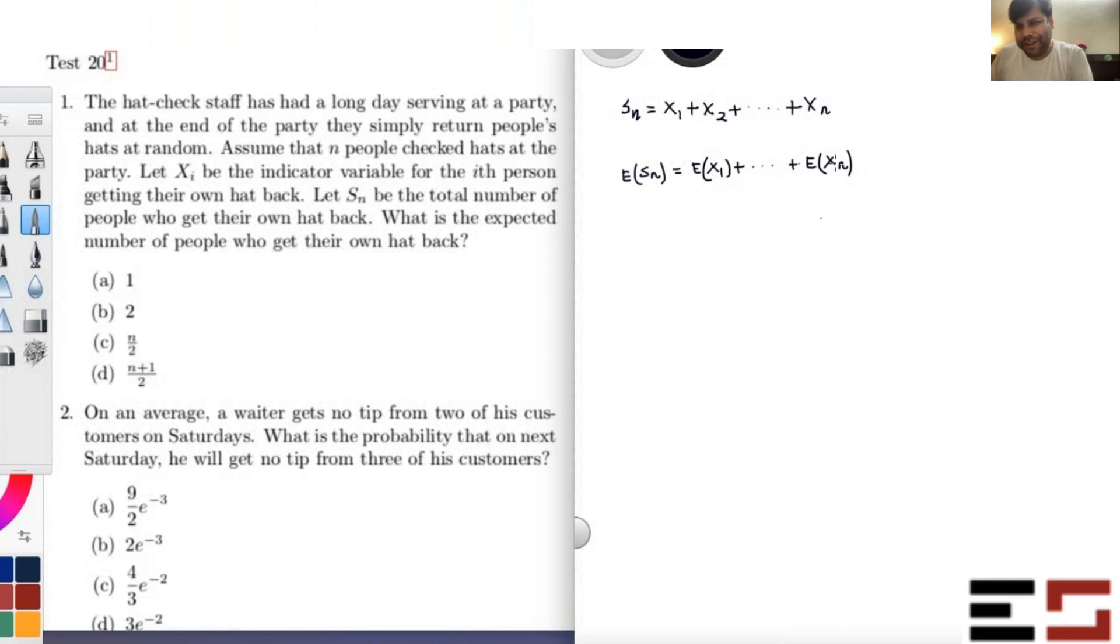So by symmetry they are all Bernoulli one by n random variables. And since they are all Bernoulli one by n random variables, the expectation of each of them is one by n. And there are n of them, so you're going to get one by n times n which is one. Is this fine? Because if you just add one by n n times, you will get one, right? Yes.